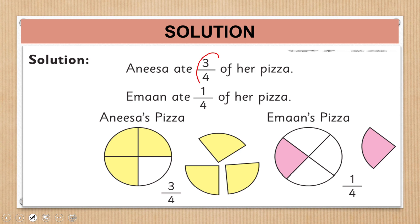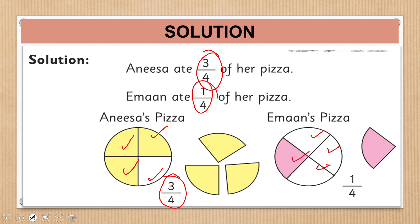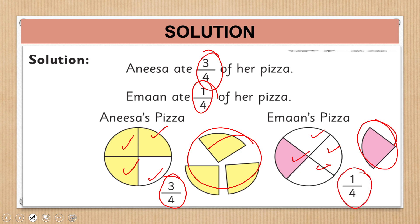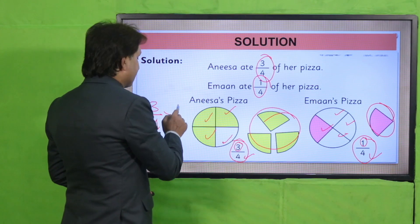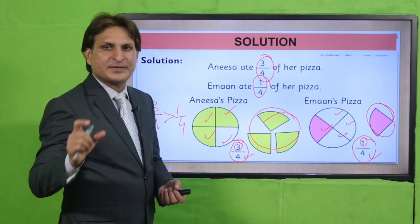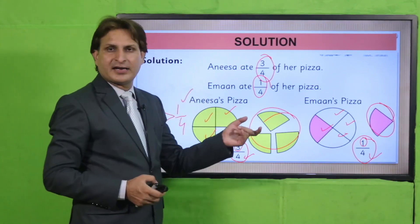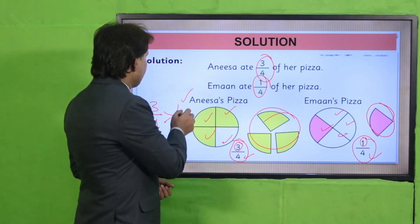Solution کو غور سے دیکھیں. Anissa نے 3/4 part of a pizza کھایا اور Iman نے 1/4 کھایا. اب ان کو compare کرتے ہیں: 3/4 اور 1/4. Denominator same ہے. First fraction کا numerator three ہے اور دوسری کا one. Three is greater than one, so first fraction is greater than second fraction. We can say 3/4 is greater than 1/4. So Anissa ate more pizza than Iman، کیونکہ اس نے تین حصے کھائے اور Iman نے صرف ایک حصہ.